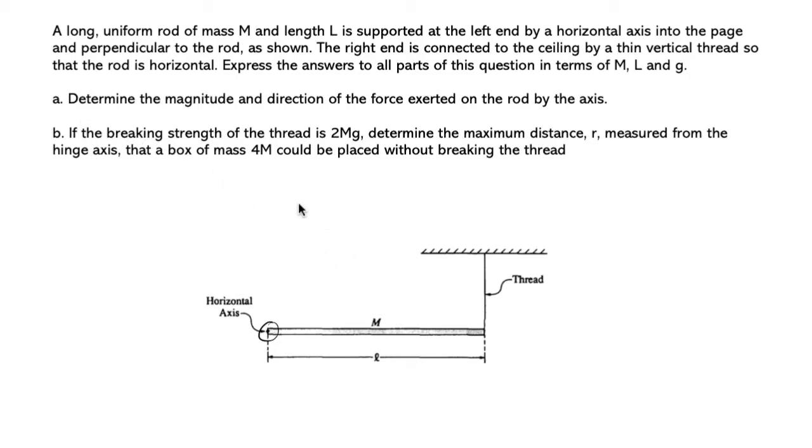Part A says determine the magnitude and direction of the force exerted on the rod by the axis. Part B says if the breaking strength of the thread is 2Mg, determine the maximum distance R measured from the hinge axis that a box of mass 4M could be placed without breaking the thread. Let's tackle part A first.